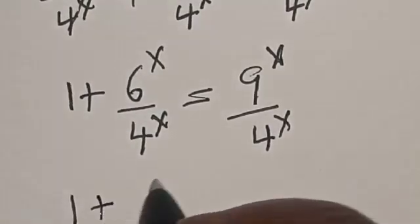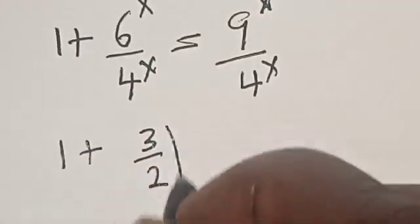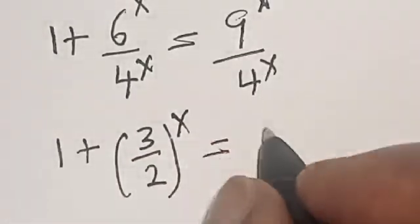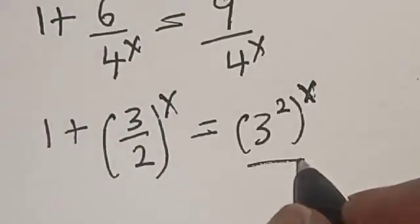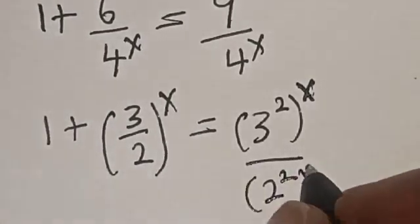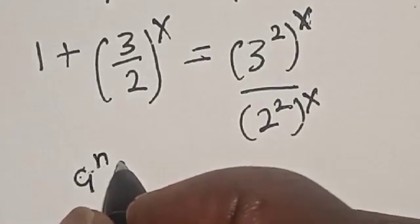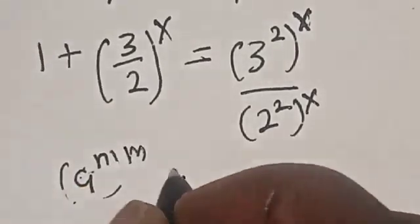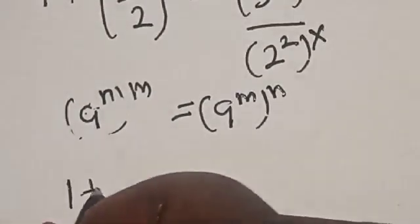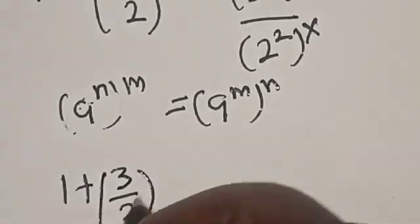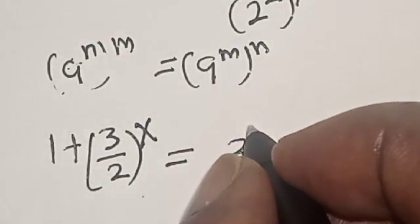This is the same thing as 1 plus 3 raised to power s divided by 4 raised to power s, which is the same as 1 plus (3 divided by 2) raised to power s, equal to 9 — which is 3 squared — raised to power s. Applying the exponent rule, where a raised to power m raised to power m equals a raised to power m, we get 1 plus (3 divided by 2) raised to power s is equal to 3 raised to power s.